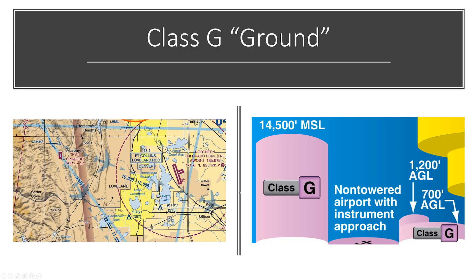Now let's talk about class G airspace on the sectional chart. It usually goes from the surface to 1,200 feet. Out in the open area, this mountain here is at 6,674 feet — class G airspace goes up to 1,200 feet above that altitude, and then class E airspace goes up to 18,000 feet, then class A. There's a shaded magenta symbol — it gets dark towards the outside and lighter towards the inside. Inside that symbol, the class G airspace is lowered to only 700 feet, with class E above that.